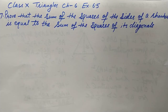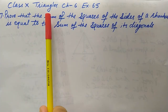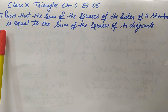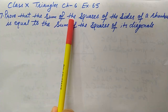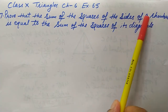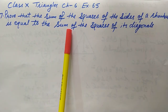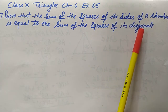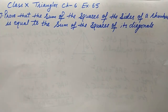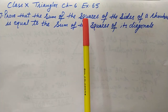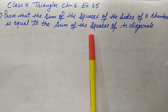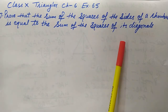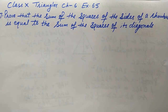Hello dear students, let's do this question. This is taken from Class 10, Chapter Triangles, Exercise 6.5, Question Number 7. The question is: prove that the sum of the squares of the sides of a rhombus is equal to the sum of the squares of its diagonals. First, draw the figure and understand the statement.